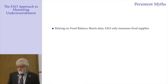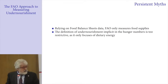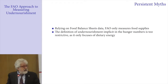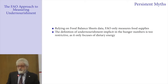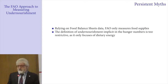So this myth should be debunked because it's no longer true. The second myth is that the definition of undernourishment implicit in the FAO number is too restrictive, because it only focuses on dietary energy — calories — and malnutrition is a broader concept, with other forms beyond caloric or dietary energy inadequacy.